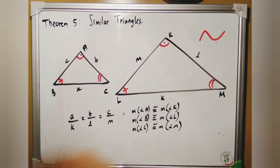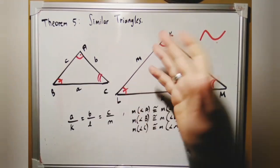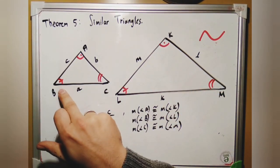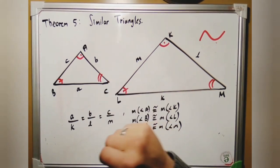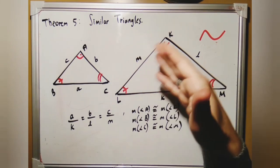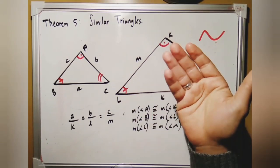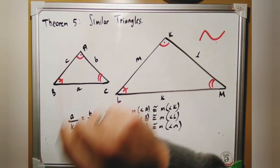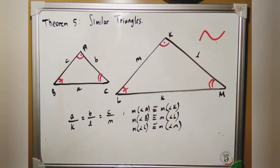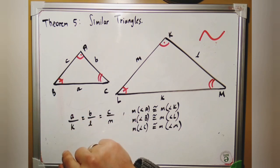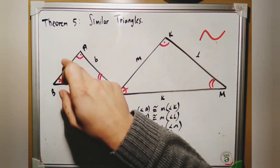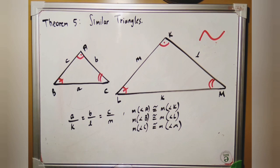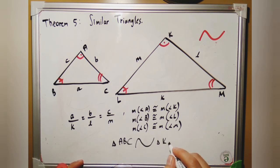Theorem 5 is related to similar triangles. Triangle ABC and KLM are similar because the corresponding angles are equal: angle A = angle K, angle B = angle L, and angle C = angle M. The corresponding angles are equal, but the lengths of the sides are different — their ratios are equal. So side a/side k = side b/side l = side c/side m. We write triangle ABC ~ triangle KLM using the similarity symbol.